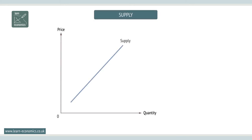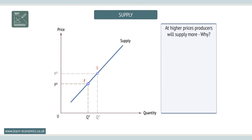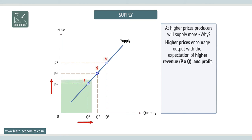Supply curves typically slope up from left to right. Price and the quantity supplied are positively related. At higher prices, producers will supply more. Why do they do this? There are several answers. Higher prices encourage output because there is an expectation of higher revenue, which is price times quantity, and higher profit.